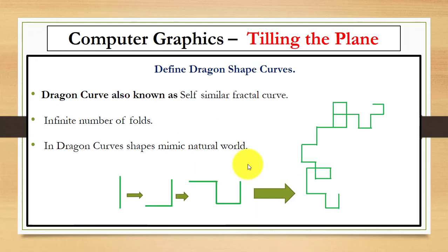Next is dragon shape curves, also known as self-similar fractal curves. Here we are using an infinite number of folds, and in this way this shape mimics natural patterns. You can see this is an example of dragon curve.